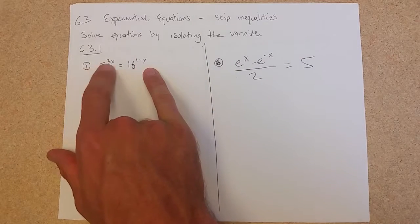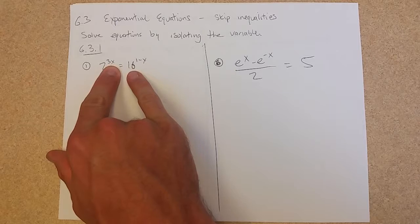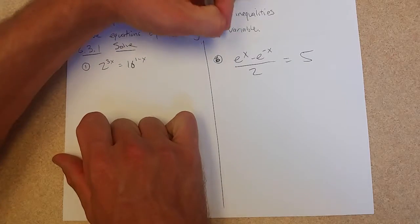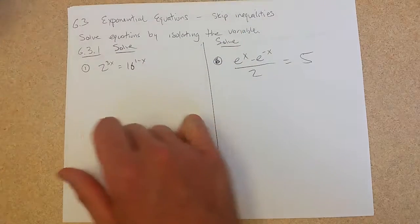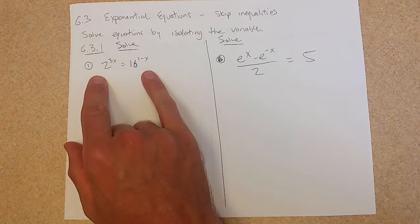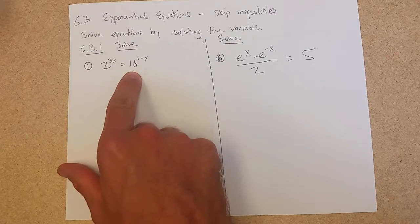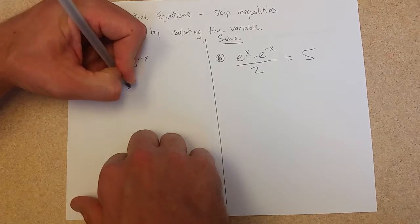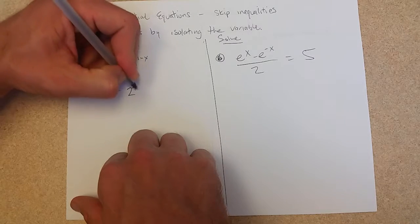So we have 2 raised to the 3x power equals 16 to the 1 minus x. We're going to be solving. There's a few ways to do this. I like to match bases. So I know 16 is a power of 2. What power is it? It is 2 to the 4th power.